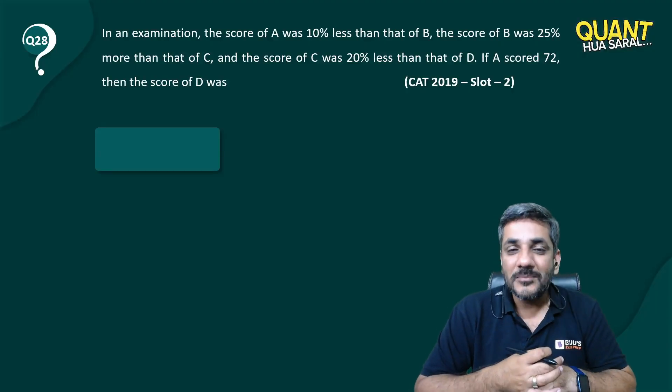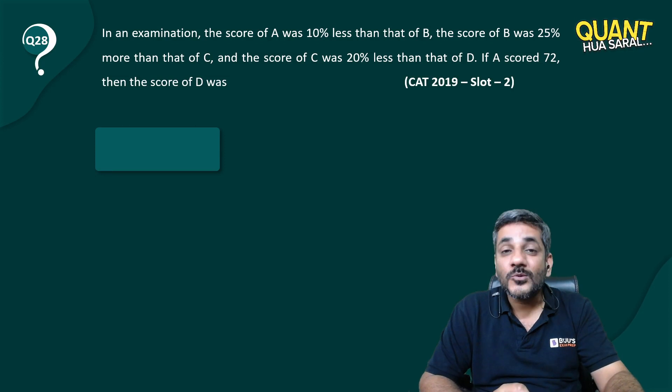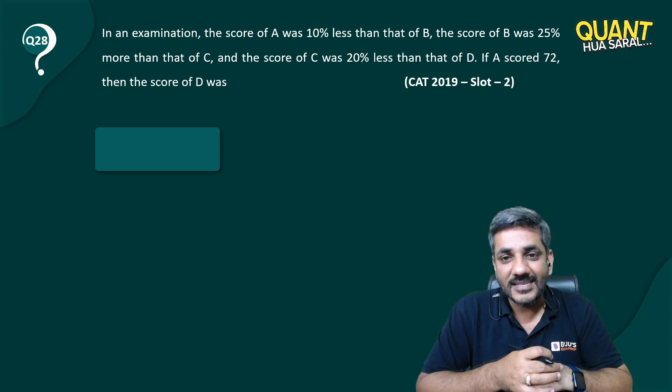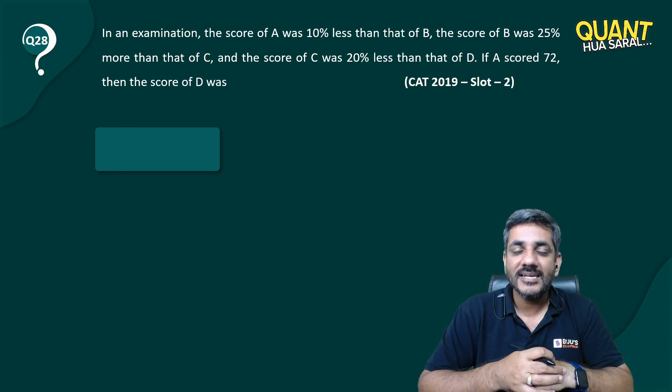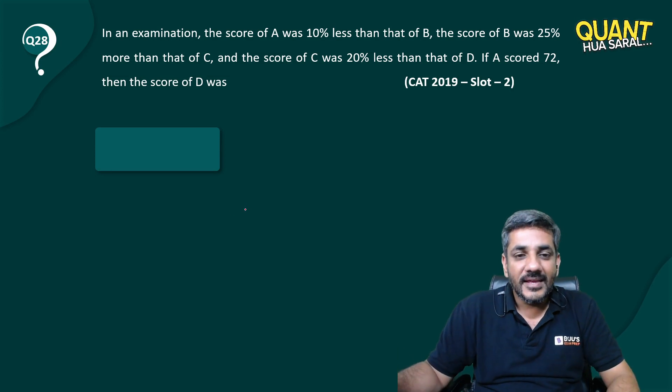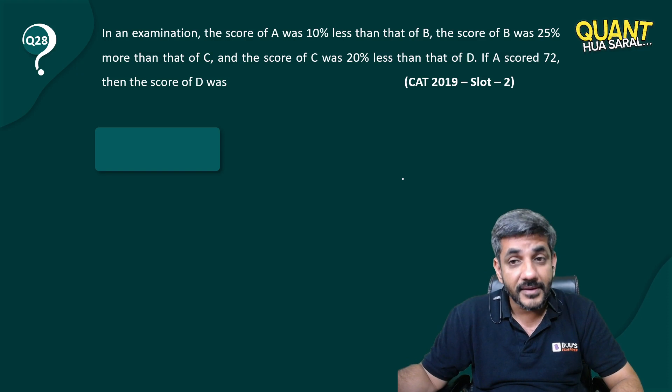Hi there, welcome back to the series and to question number 28 from CAT 2019 Slot 2. In an examination, the score of A was 10% less than that of B. The score of B was 25% more than that of C.